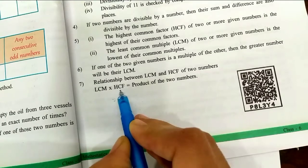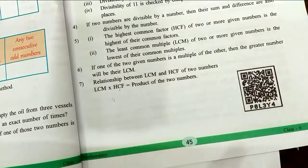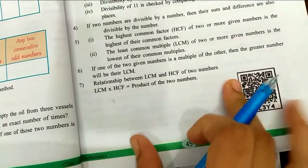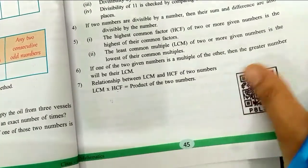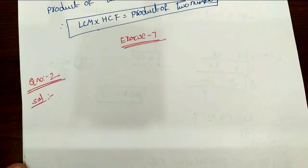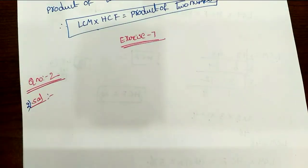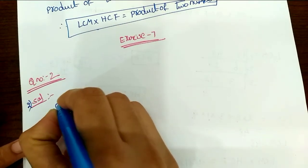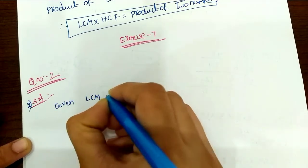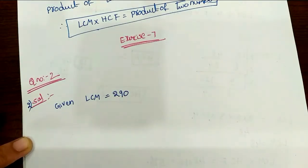HCF is found using the product of the 2 numbers divided by the LCM. We will use this formula to find what we need. Given: LCM equals 290, and the product of 2 numbers equals 7250. We know that LCM into HCF equals the product of 2 numbers.